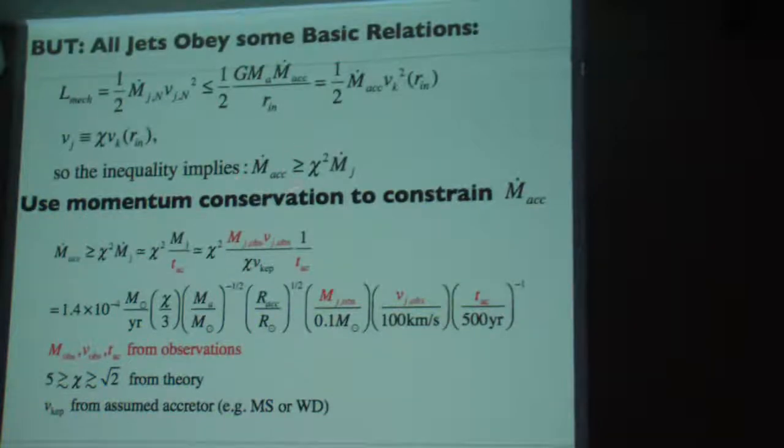The inequality here implies that the accretion rate is greater than the needed accretion rate is at least as large at whatever chi this is. Let's say it's 3 squared, which then makes this 10 times the jet outflow rate. Now, to constrain the accretion rate, you can use momentum conservation. And momentum conservation comes from what you measure. The accretion rate in any system has to be larger than what you measure in the observed jet. As it plows through the medium and collects mass, as long as you have chi, this parameter chi, you can trace back what the outflow speed was from theory and use the momentum conservation to get a constraint on the needed accretion rate to supply that outflow mass rate.